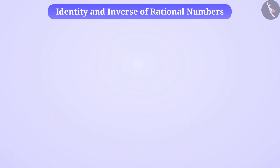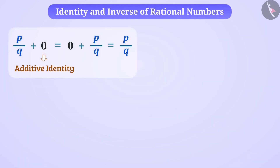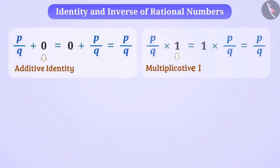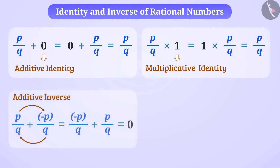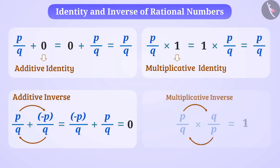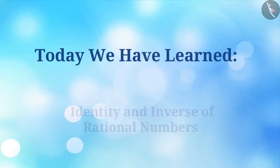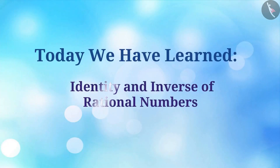So now you must have understood additive identity, multiplicative identity, additive inverse, and multiplicative inverse. Today we have learned about the inverse of rational numbers. In the next video, we will see examples on it.